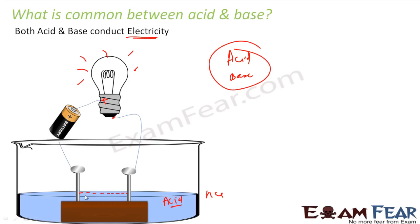That means there is something — charge is going from here to here. But here nothing is there except this acid, so we can say that acid is conducting electricity. You can repeat the same experiment with a base and you will find that the bulb glows with the base also. That means base also conducts electricity. You can do this experiment in your lab.